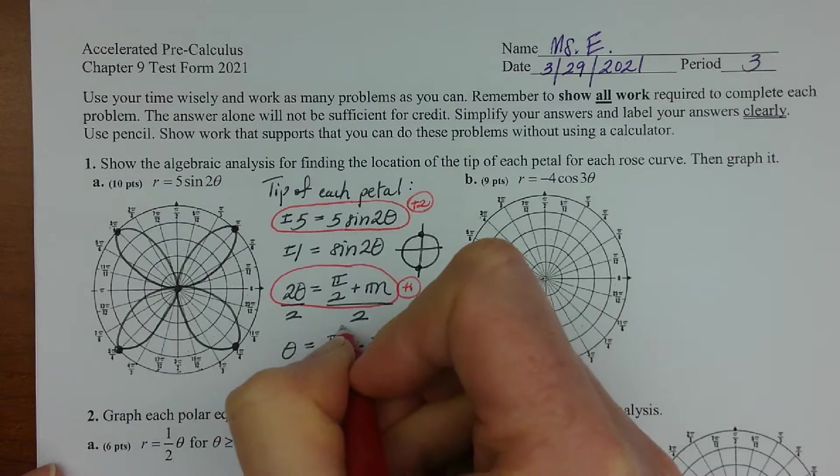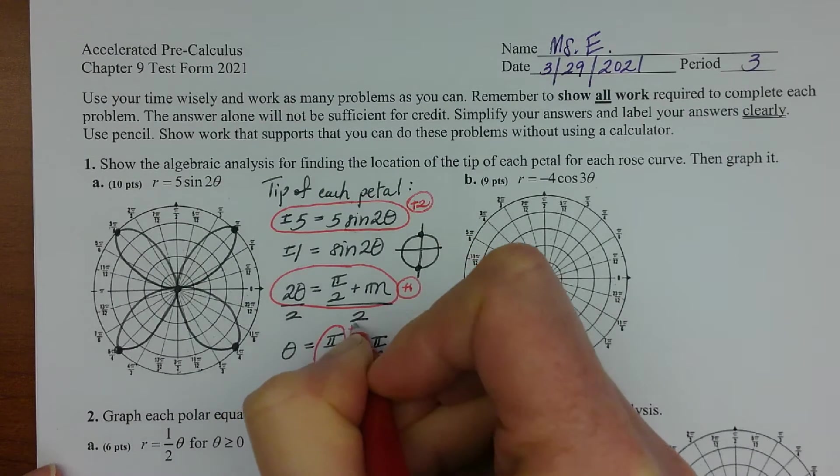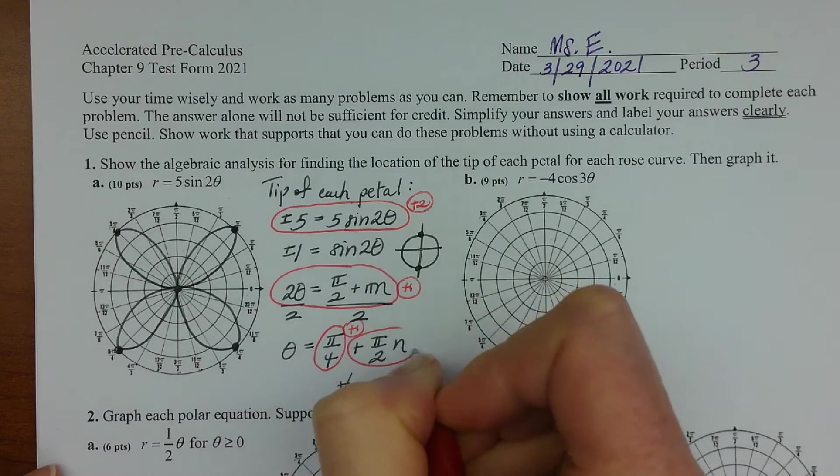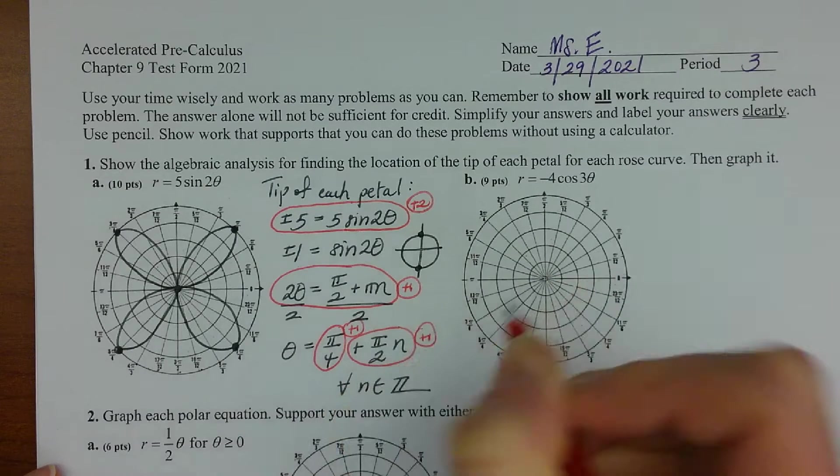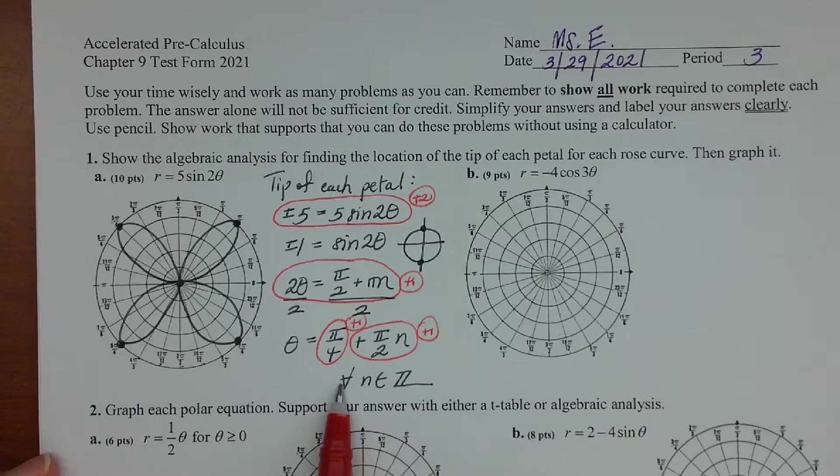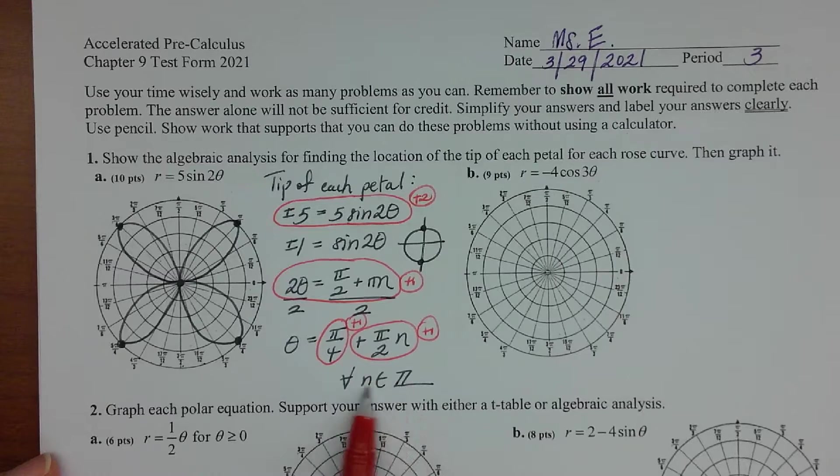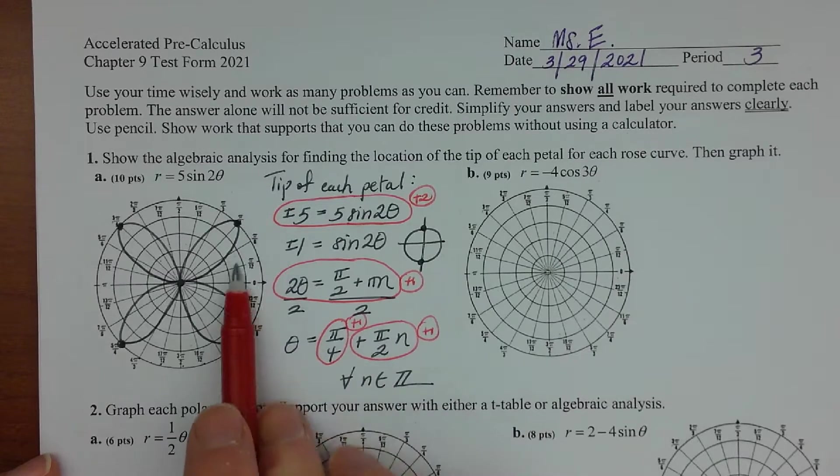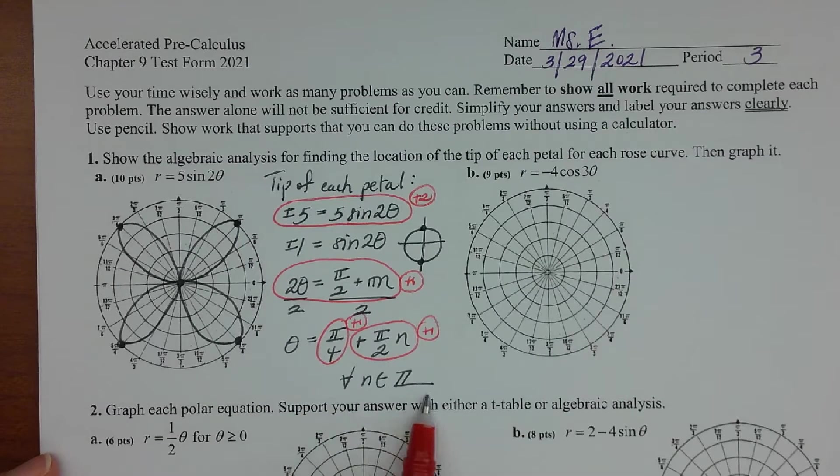When you solve for theta, pi over four in your answer is worth one point, and then plus pi over two n is worth another point. And this really should be here. I don't know if I'll have enough points to give it any necessary credit for this, but I do hope that you have a habit of writing that.